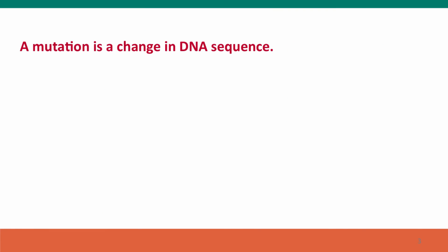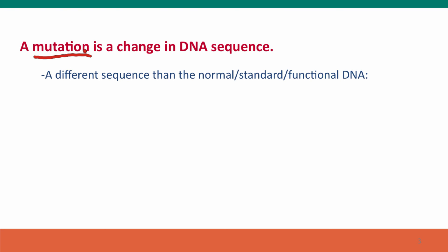The basic definition is that a mutation is a change in DNA sequence. We can clarify that by describing some constraints: the DNA sequence has to have become different — different than the normal, standard, functional DNA sequence for that organism, usually different than the sequence that was there before.